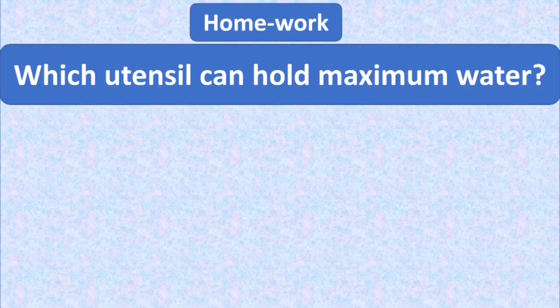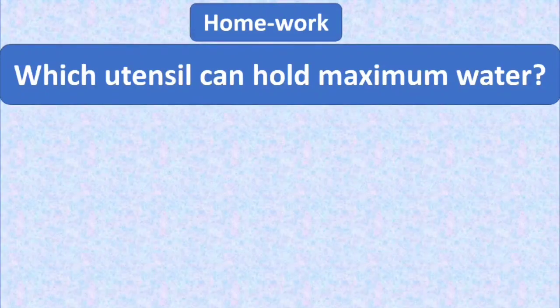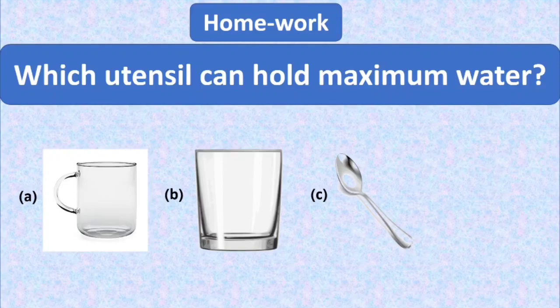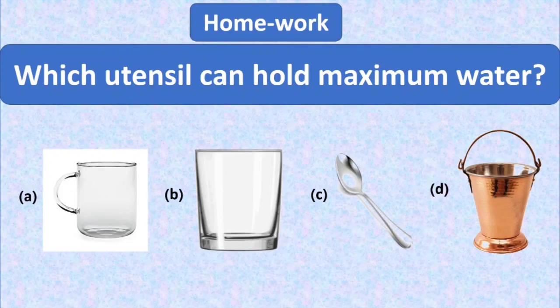Now it's homework time kids. You have to revise all these MCQs at your home. We have one more MCQ as your homework. And the question is, which utensil can hold maximum water? The four options are, option A is a cup, option B is a glass, option C is a spoon, and option D is a bucket. You have to think and tick mark the right option. Stay tuned to your online studies. Take care of your health. Goodbye. Thanks.